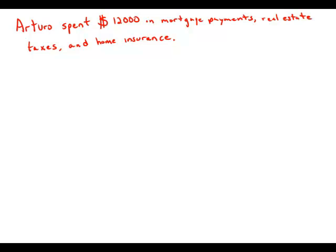So I'm going to represent mortgage payments as M, real estate taxes as T, and home insurance as I. And so we have that M plus T plus I equals $12,000. And what we'd like to be able to figure out is individually what is the value of T.